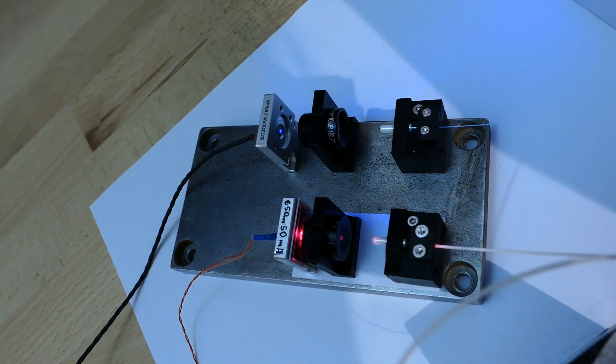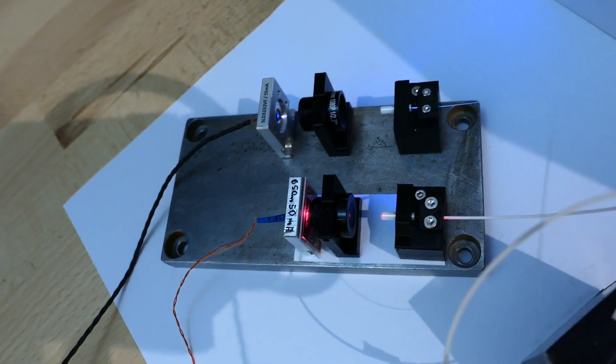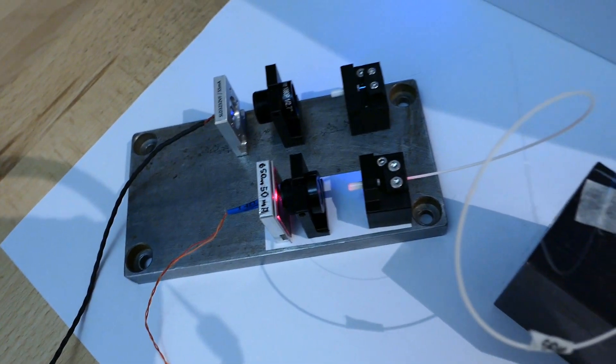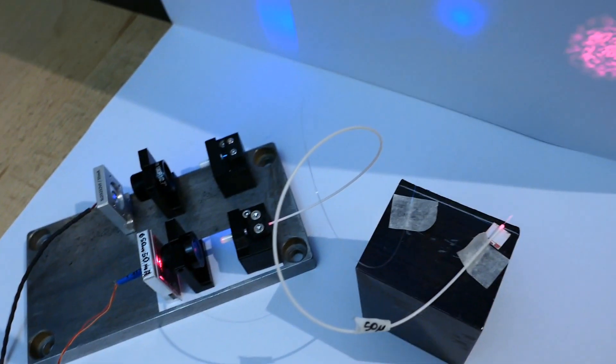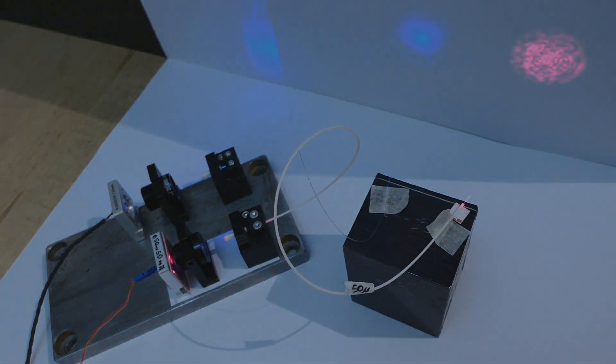In this video, the setup you see here will be used to demonstrate some differences between multi-mode and single-mode fibers. A 405 nanometer and a 650 nanometer laser diode is used as a light source.